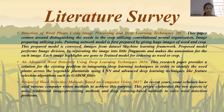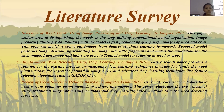For the literature survey, the first paper is 'Detection of Weed Plants using Image Processing and Deep Learning Techniques,' published in 2017. It uses a convolutional neural network with images as input, where images are processed using the YOLO technique.